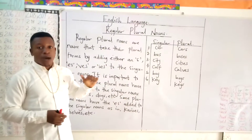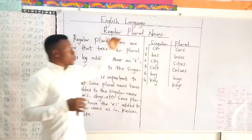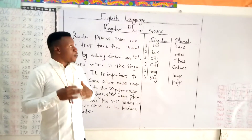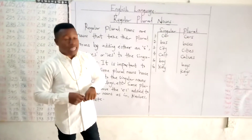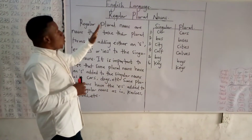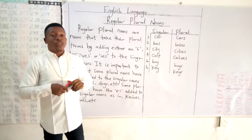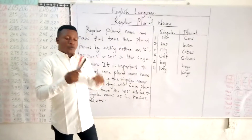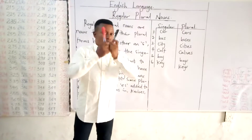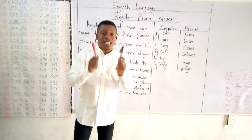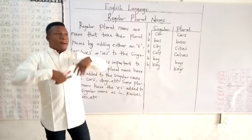Now for us to understand this topic properly and very well, I'm going to break it down. We're going to understand first what a plural is. When we talk about plural, we're talking about things that are more than one. For example, I have two markers here, so these two markers are more than one. So this is a plural — anything that has to do with two, three, and many numbers, you classify as a plural.